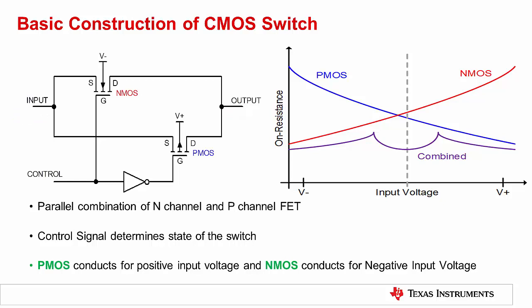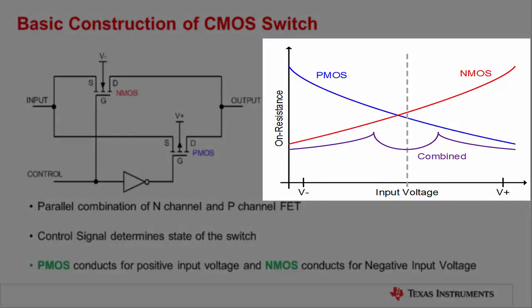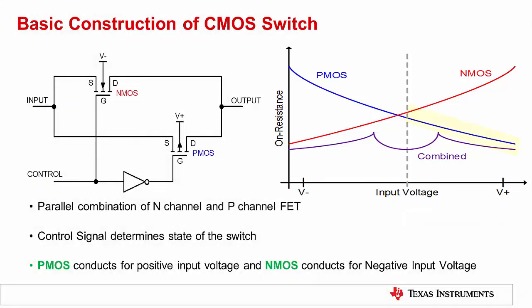PMOS and NMOS switches have a voltage-dependent resistance which varies with the input signal, as shown in the ON resistance versus input voltage curve here. PMOS switches offer lower ON resistance for positive input voltages, while NMOS switches offer lower ON resistance for negative input voltages. The parallel combination of these two devices has a combined ON resistance which has much lower variation with input voltage swing and allows us to pass both signal polarities with equal ease.